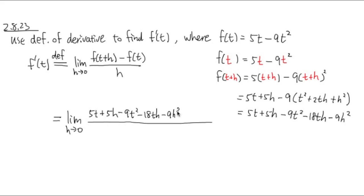And you are going to minus, because the form of the numerator is to minus, right? f of t, which is that. So I will have to put parentheses. 5t minus 9t squared. All over h.